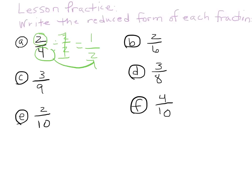Let's take a look at two-sixths. Two is the highest number I can go with, so I'll divide by two over two. Six is an even number, so I know it's going to work. Two goes into two one time, two goes into six three times. That's going to be one-third.